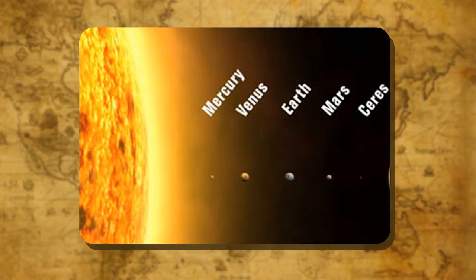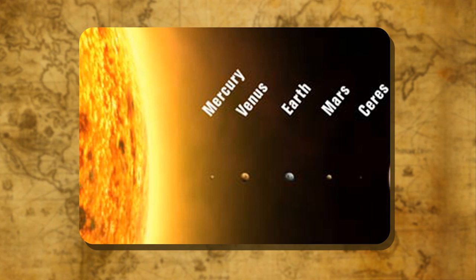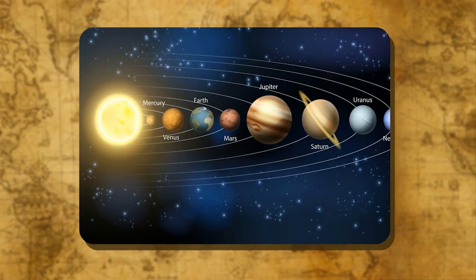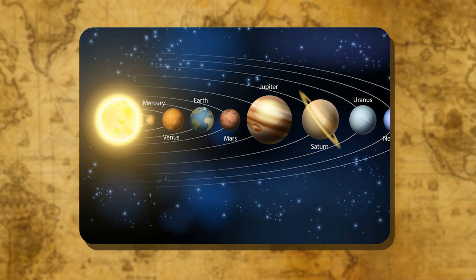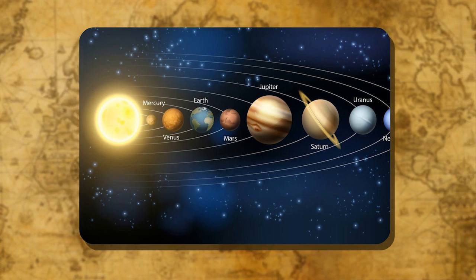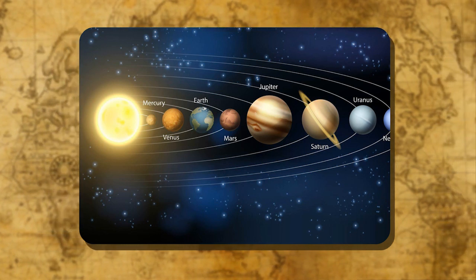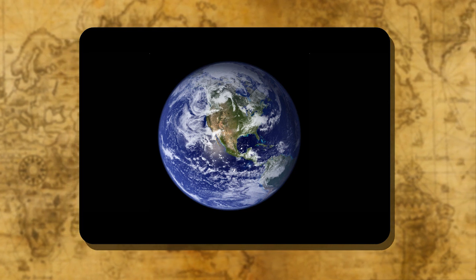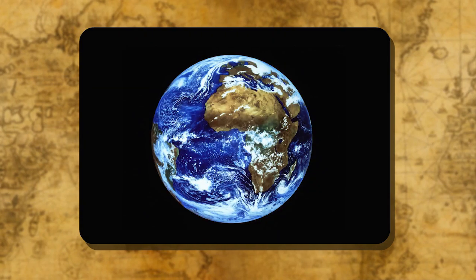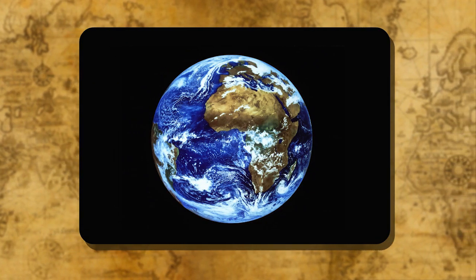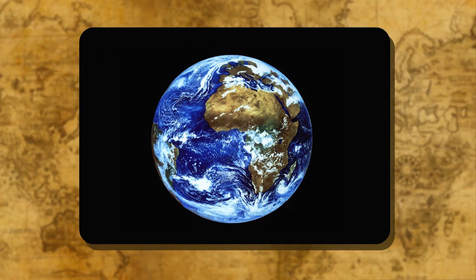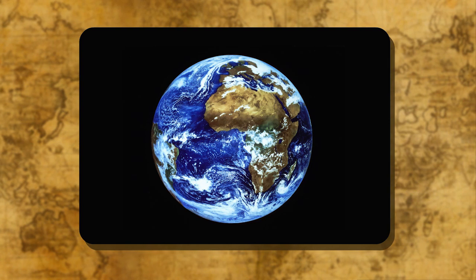The Earth — a unique planet: The Earth is the third planet from the sun, 149.6 million kilometers away on average. It takes 365.26 days to orbit around the sun. It is the fifth largest planet in the solar system. It is slightly flattened at the poles, which is why its shape is described as a geoid — meaning an Earth-like shape.